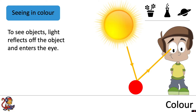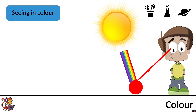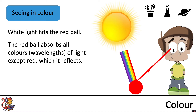To see objects, light reflects off the object and enters the eye. But how do we see a ball as red? White light hits the red ball, and the red ball absorbs all colours — all wavelengths of light — except red, which it reflects.